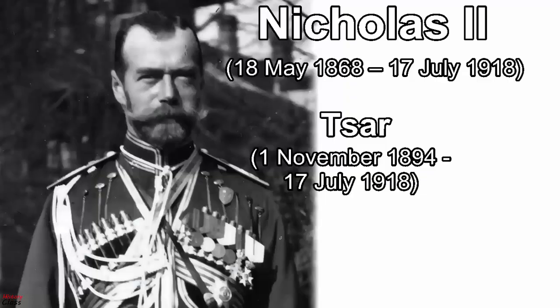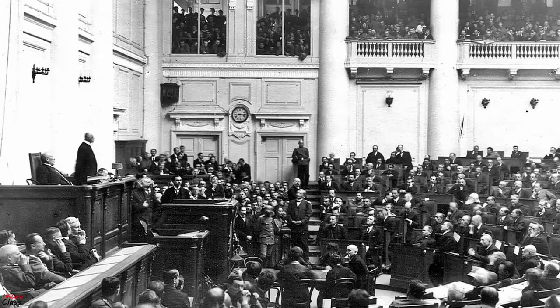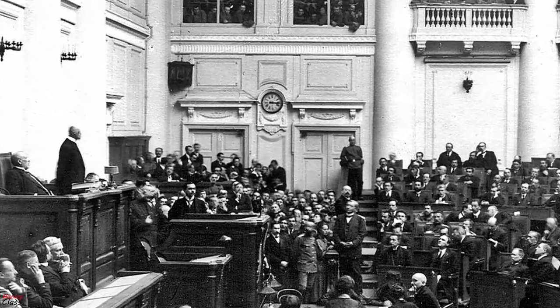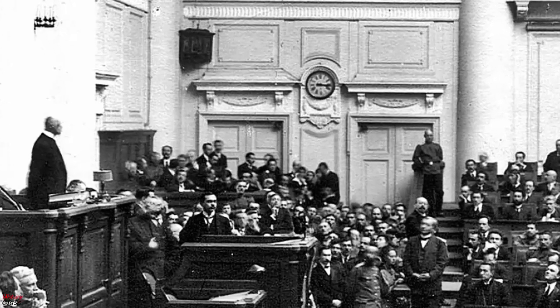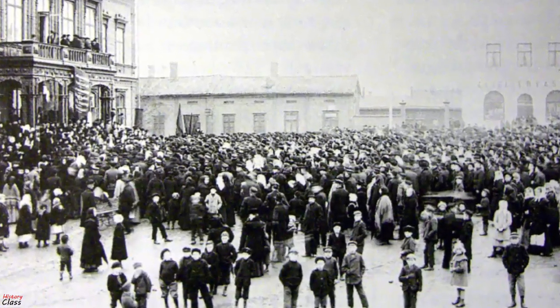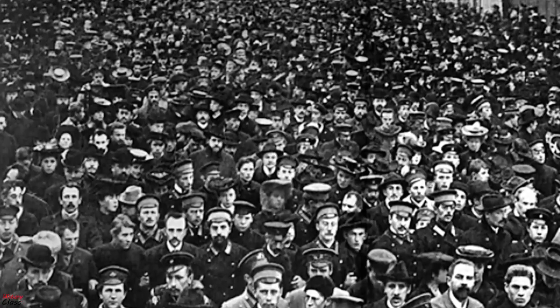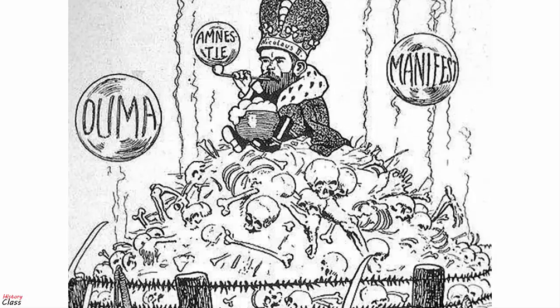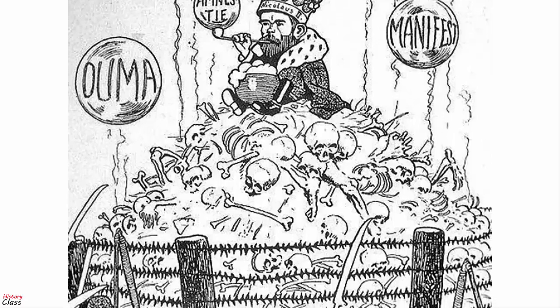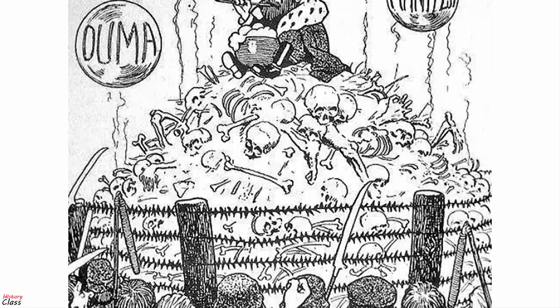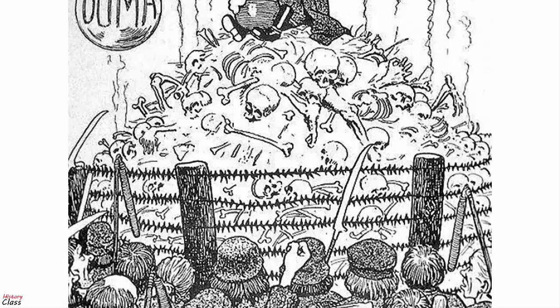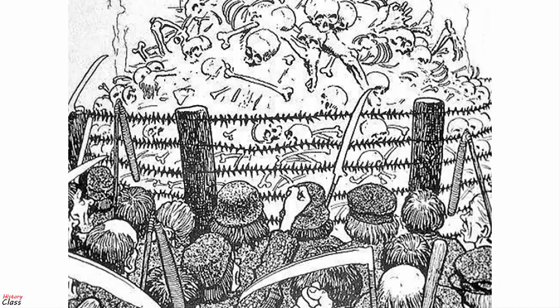Nicholas responded in February by announcing his intention to establish a State Duma of the Russian Empire, but with consultative powers only. His proposal did not satisfy the striking workers, the peasants, or even the liberals. The government decree on August 6th announcing election procedures for the advisory assembly stimulated even more protests, which increased through September. The rebellion reached its peak in October-November.